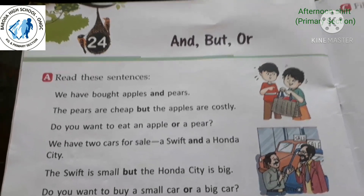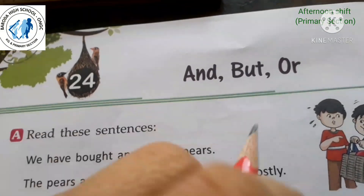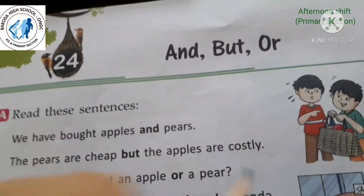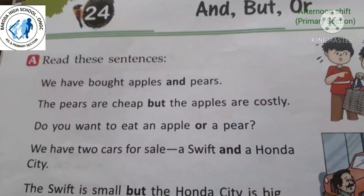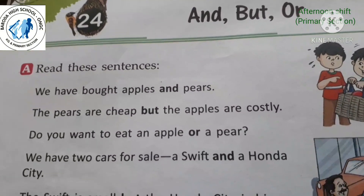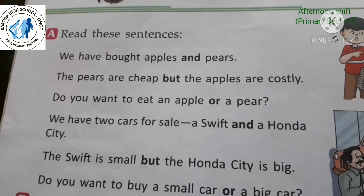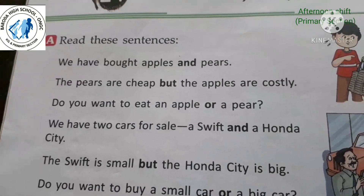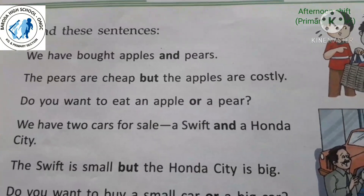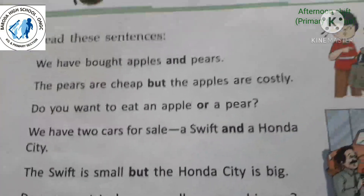Open your grammar textbook, Lesson number 24 — and, but, or — on page number 66. And, but, and or are conjunctions, meaning connecting words. Conjunctions connect words, groups of words, or short sentences. We use 'or' to show a choice between two or more options, 'and' to combine similar ideas or add information, and 'but' to show a difference or an opposite idea.